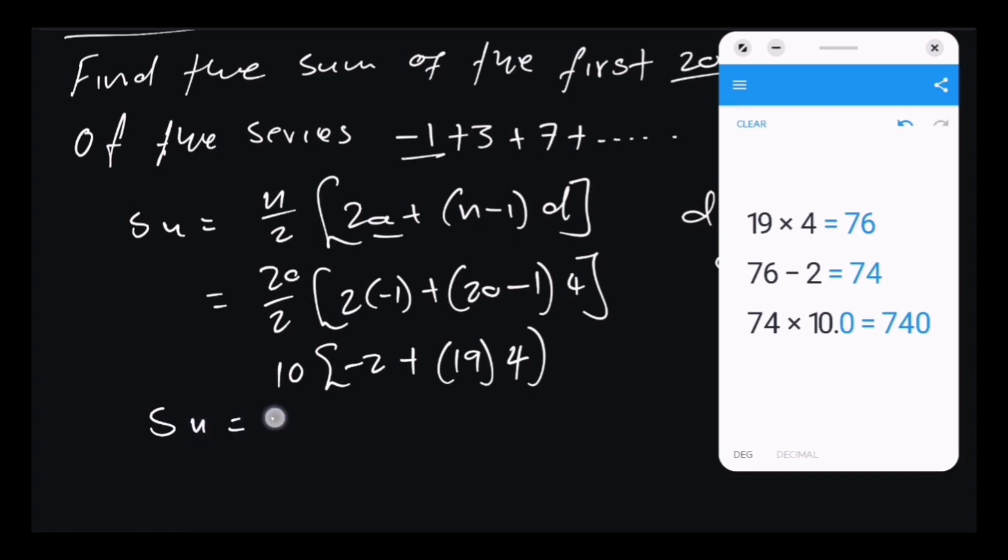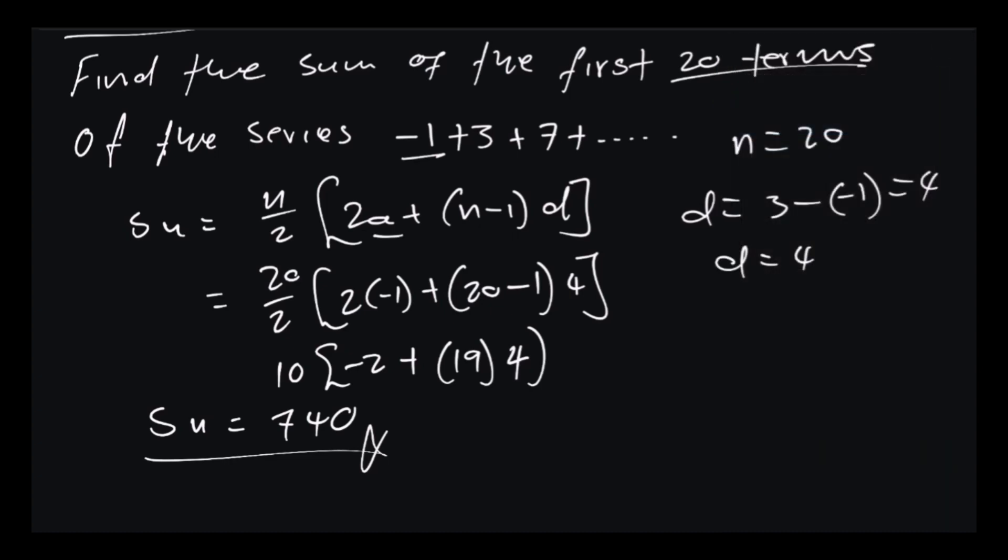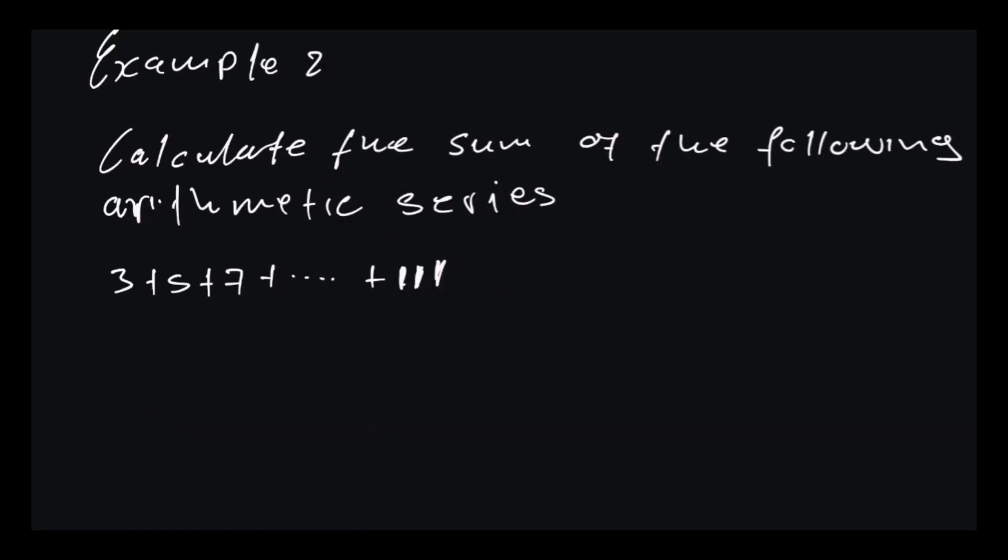So our Sn in this case is equal to 740 and we're done. So you can see in this case we have applied the first formula that I showed you. All right, let's look at the next example where we apply the second formula. In this example we are asked to calculate the sum of the following arithmetic sequence.